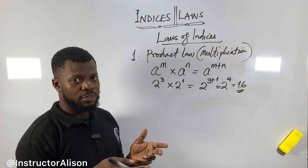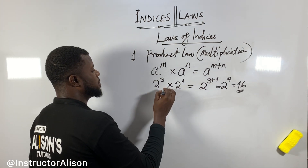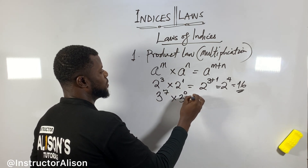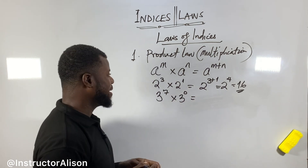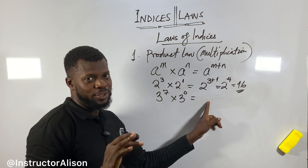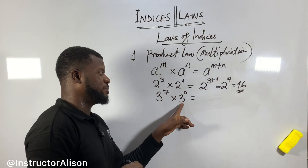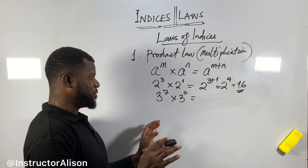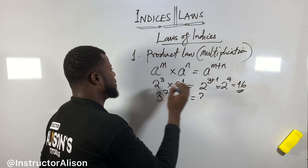Try this one: 3 raised to the power of 7 times 3 raised to the power of 0. Apply the product law and put the answer in the comments. Don't worry if you don't get it right away — we'll cover the zero index law shortly.